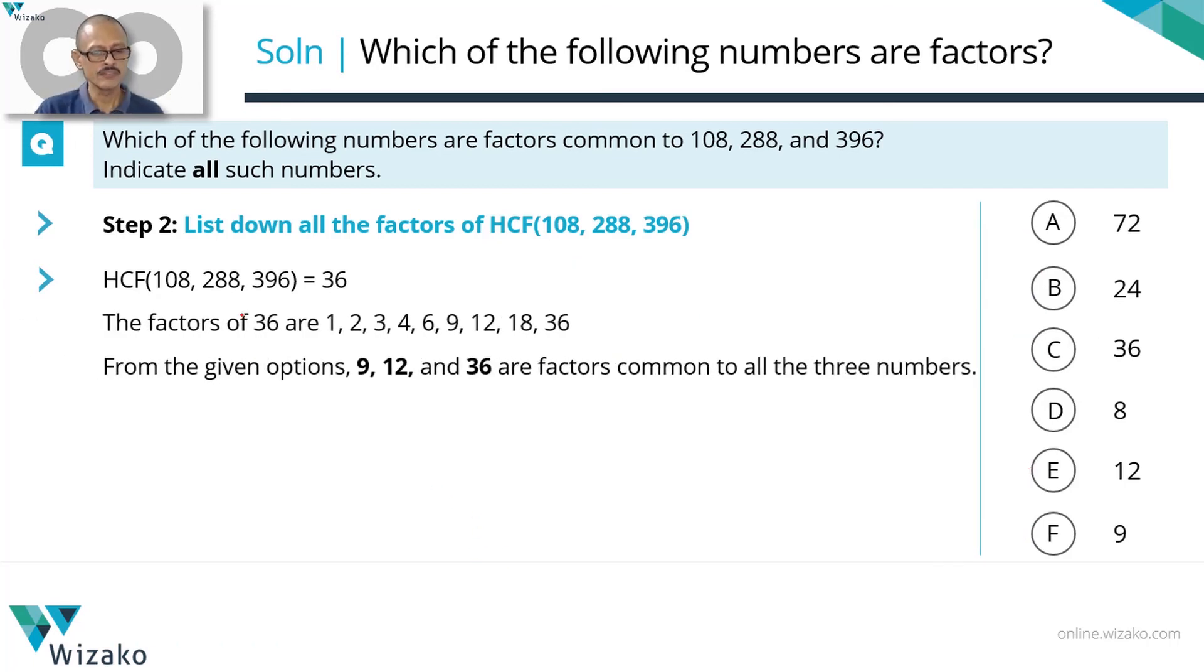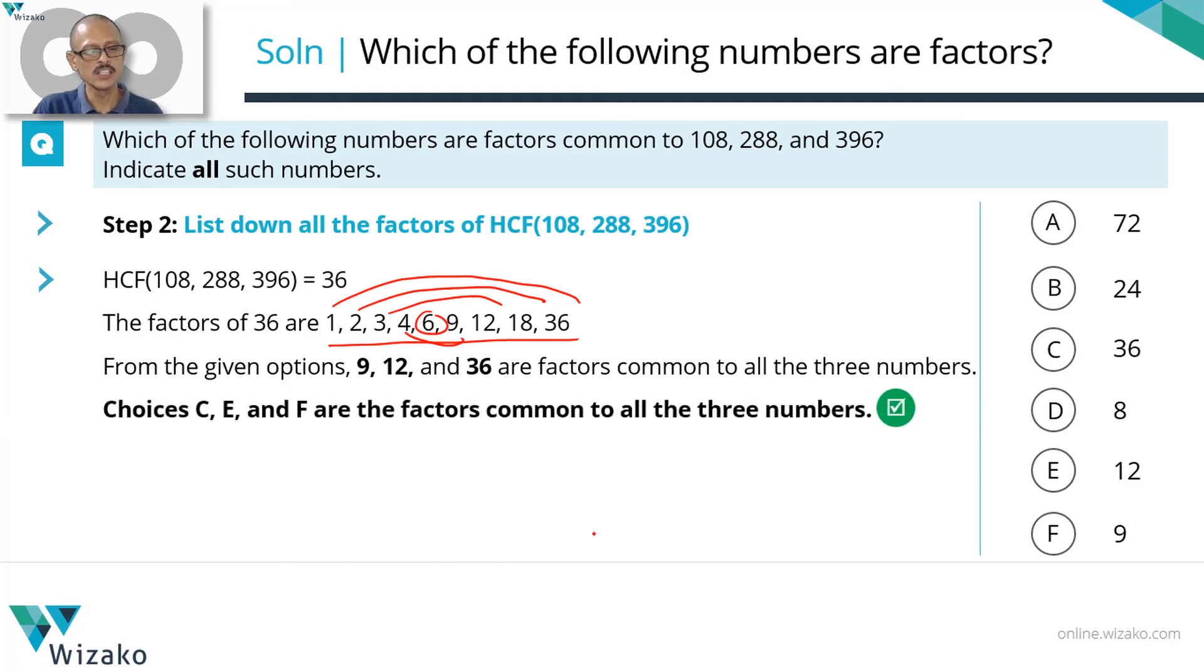Quickly summarize it in a printed form, listed down all factors of 36, listed down in pairs whenever they are asking you: 1, 36; 2, 18; 3, 12; 4, 9; and then finally 6. Check with the answer option, we find that 9, 12, and 36 are the correct answers. Answer choices C, E, and F are the correct ones.